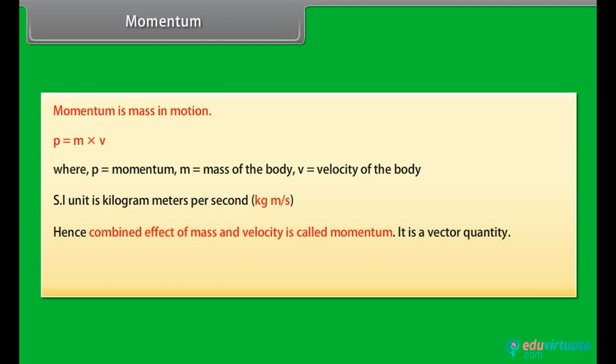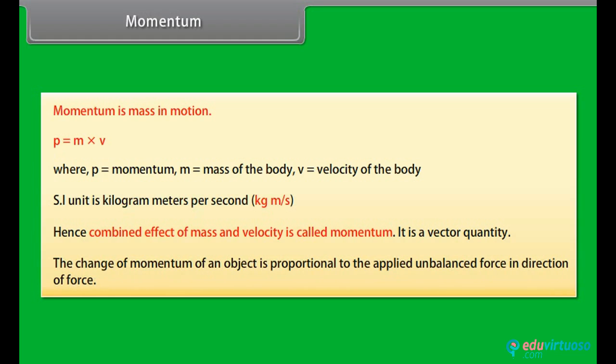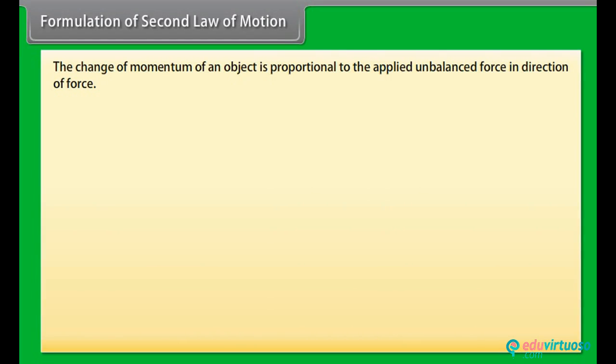Hence combined effect of mass and velocity is called momentum. It is a vector quantity. The change of momentum of an object is proportional to the applied unbalanced force in direction of force. Formulation of second law of motion: the change of momentum of an object is proportional to the applied unbalanced force in direction of force.